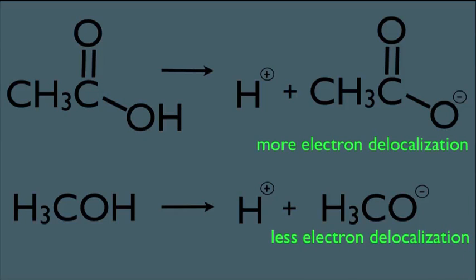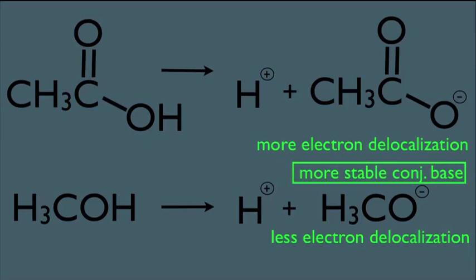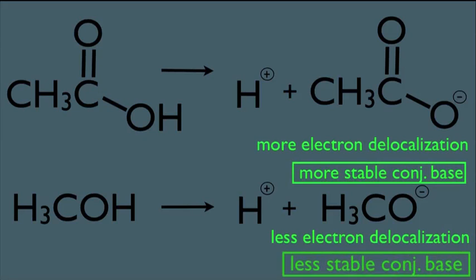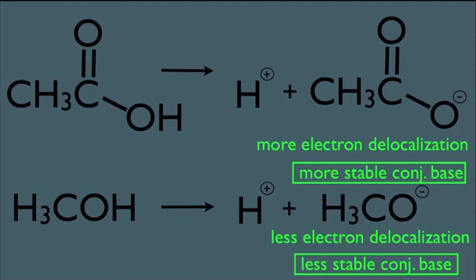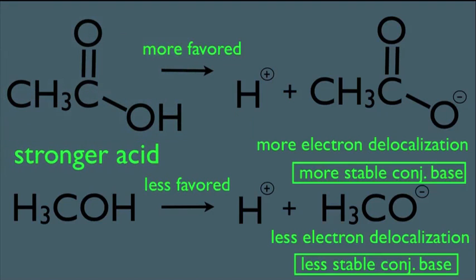And what that means for us is that the top conjugate base is more stable, and the bottom conjugate base is therefore less stable. We'll go into this in more depth in a few minutes. However, remember what that means is the top reaction is more favored, and the bottom reaction is less favored. Therefore, the top reaction gives up more H+, making this species the stronger acid, or the one with the lower pKa.